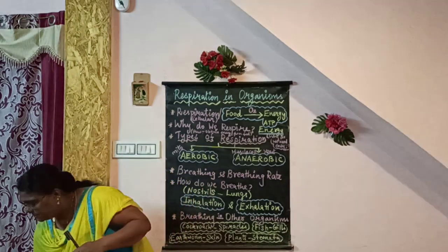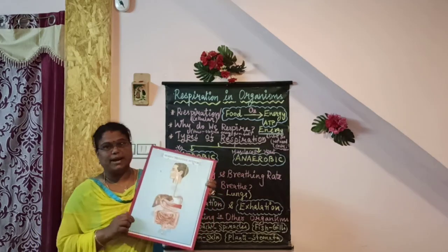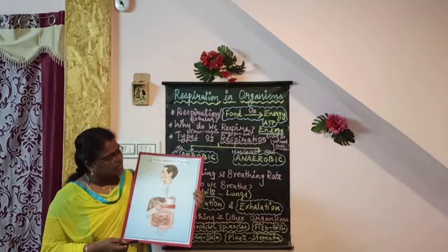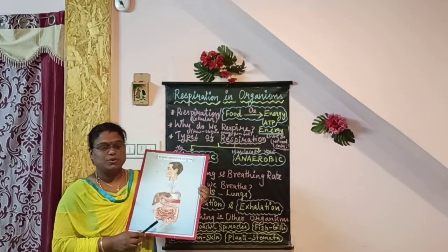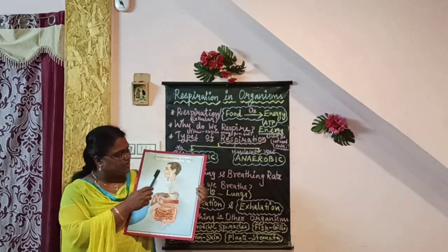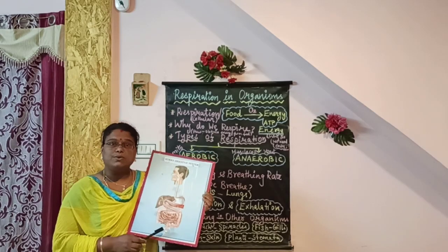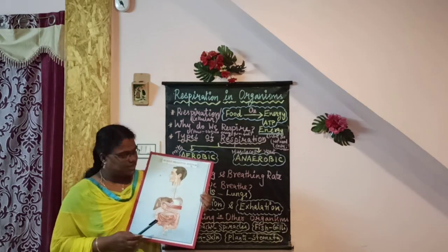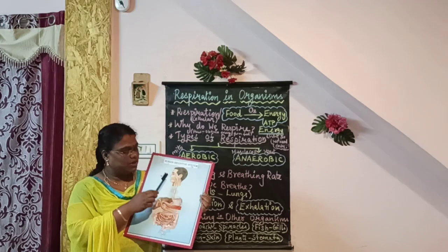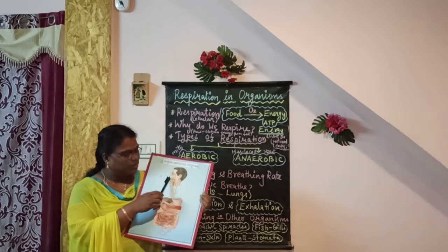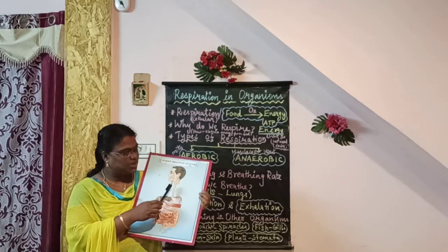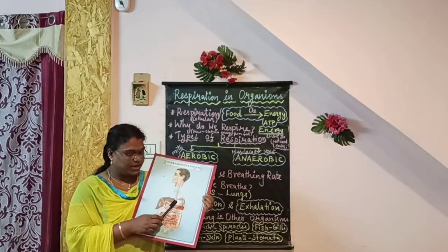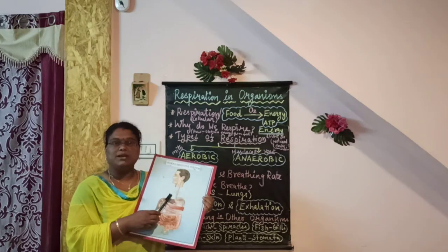First we will see digestion. This is the human digestive system, which starts from mouth to anus. This you have already studied in nutrition in animals. The human digestive system starts from the mouth — we intake food through the mouth, it reaches the stomach through a pipe called the esophagus, and there the action of HCl and mucus plays an important role in digestion.